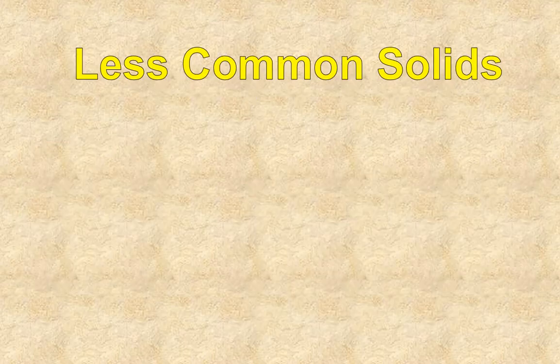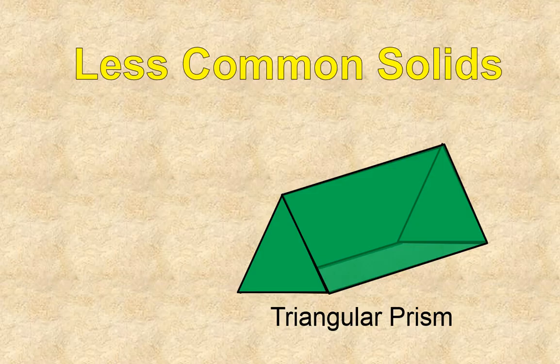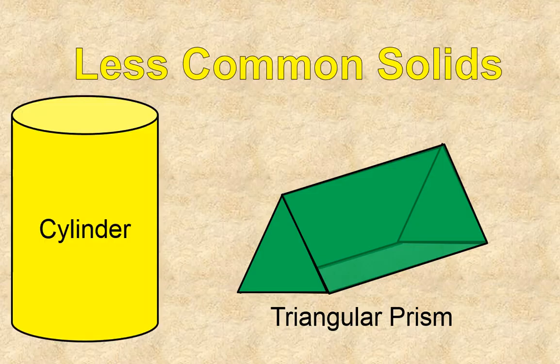Some less common solids are a triangular prism. Notice that it has a triangle on these two ends, and these edges or faces here that are triangular would be called the bases of this triangular prism, even though they're not on the bottom. So they have triangular bases, that means it's a triangular prism. And a prism that has a circle on the top and on the bottom, or in other words, the base is a circle, is called a cylinder. It looks kind of like a tin can. We have our cylinder and our triangular prism.